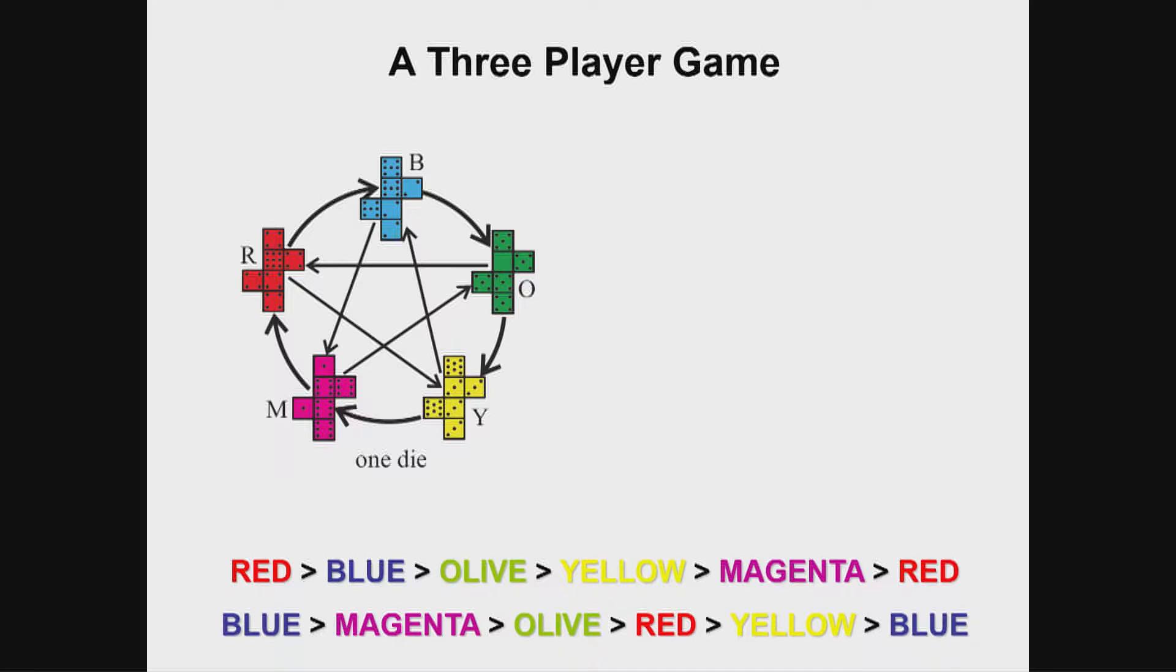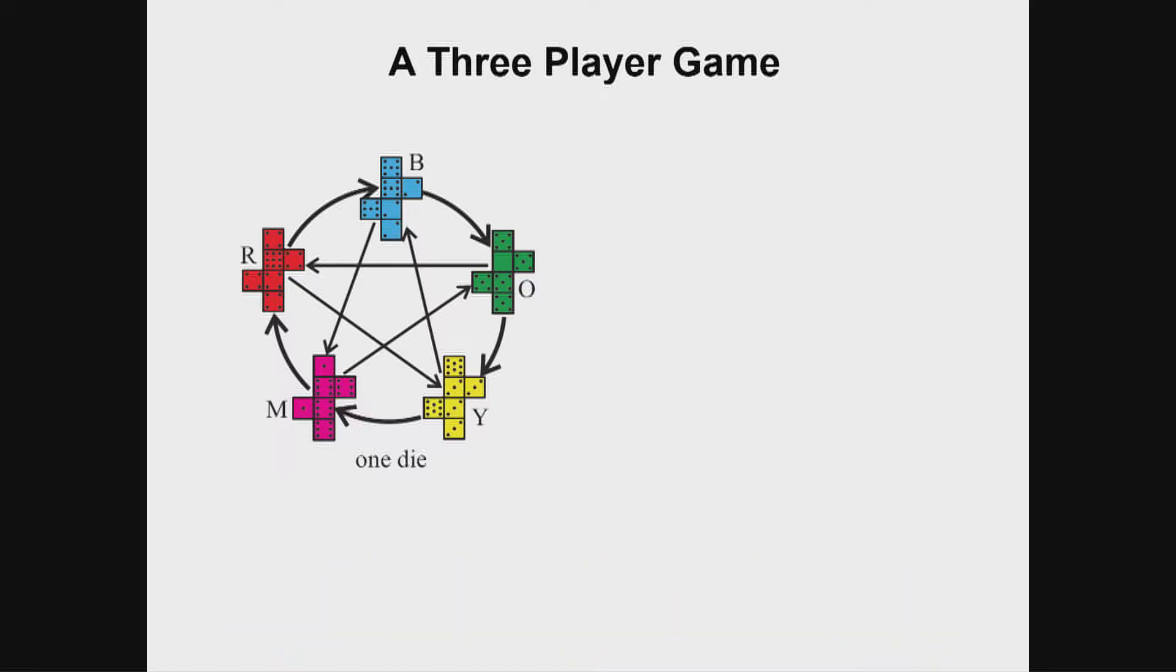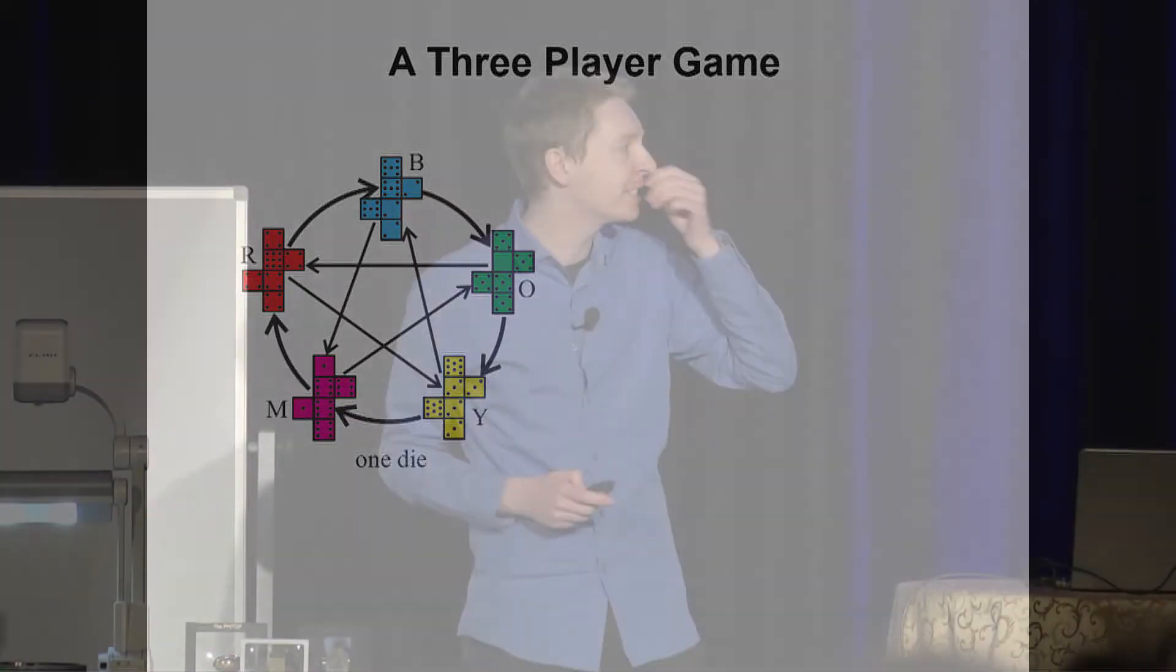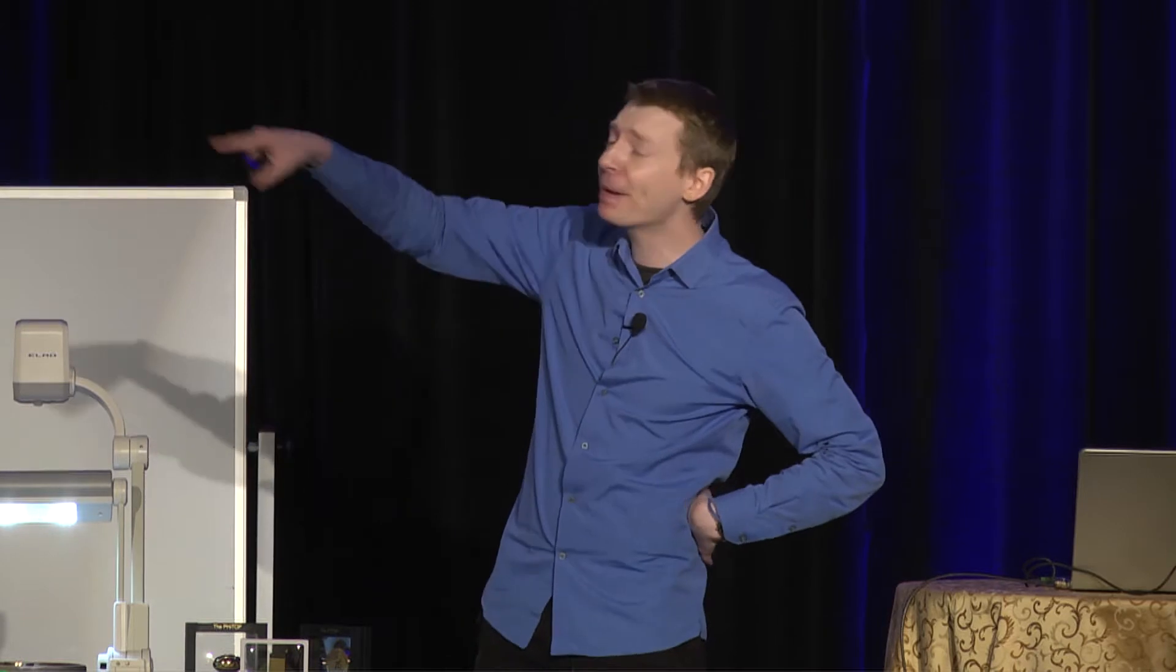But the really interesting part is, if we now double the dice, so we're going to roll, say, two blue dice, we use the total instead. If we double the dice, the pentagram chain stays the same, but the circle flips. It reverses order. So what was the circle of victory on the left now becomes a circle of defeat.